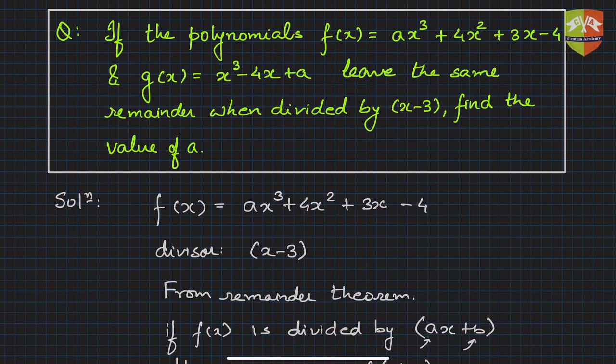Hello friends, welcome to another problem solving session on polynomials. We are dealing with remainder theorem applications. The question says if the polynomials f(x) = ax³ + 4x² + 3x - 4 and g(x) = x³ - 4x + a leave the same remainder when divided by (x - 3), find the value of a.